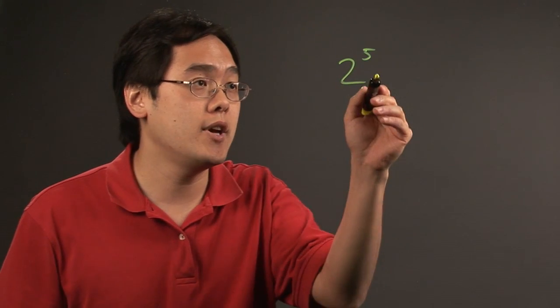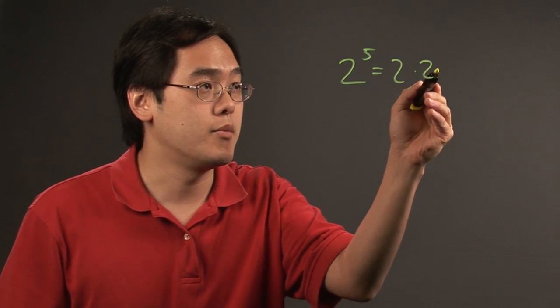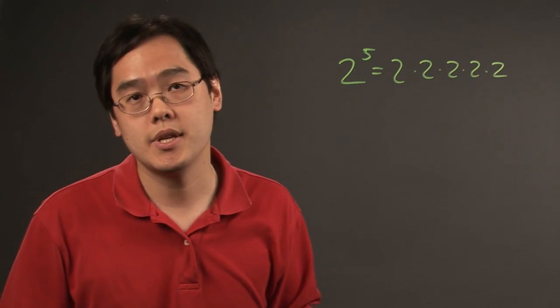Suppose, for example, if you want to find out 2 to the 5th. Now, 2 to the 5th is like writing the number 2 multiplied by itself 5 times.